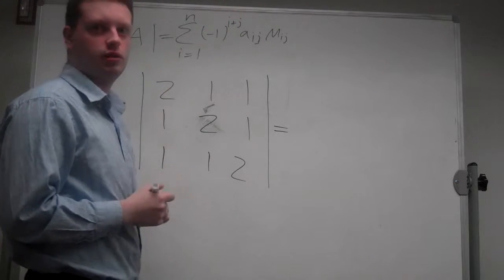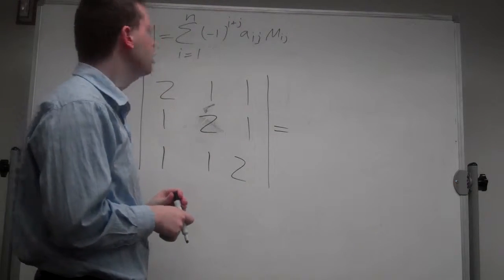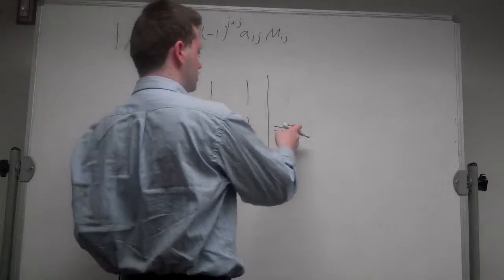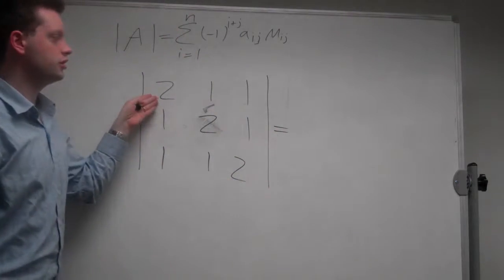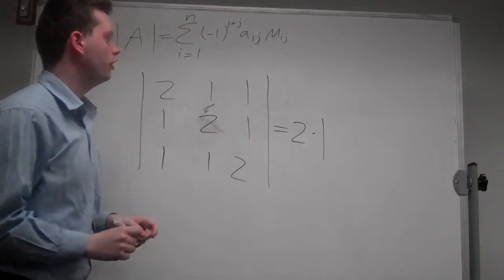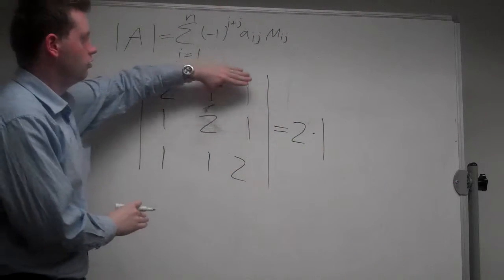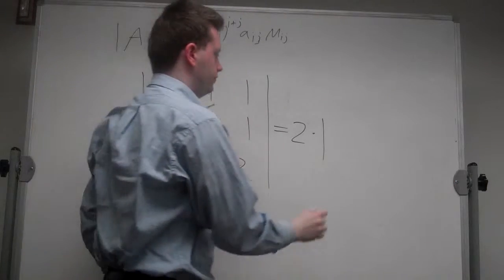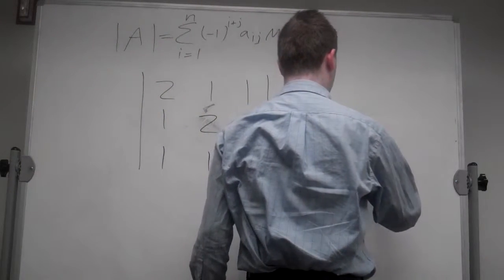The indices sum up to an even number, so it's positive. The first element is 2 times the determinant of the matrix if we delete row 1, column 1, which is [2, 1; 1, 2].